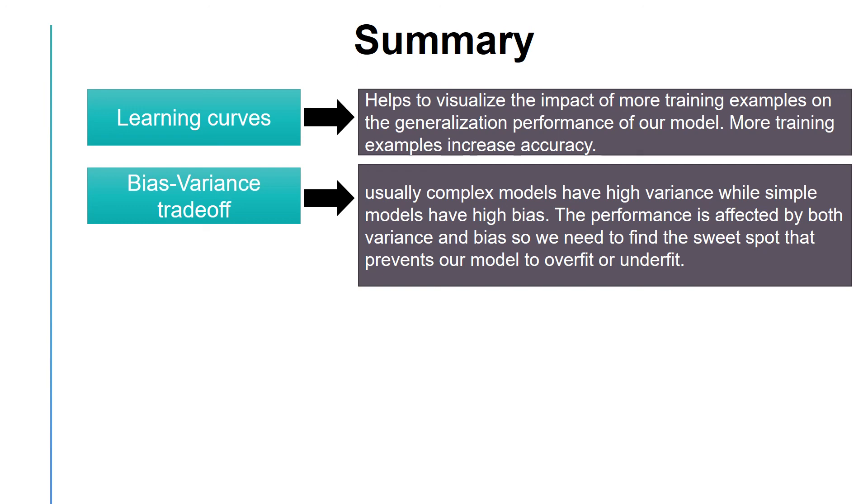While simple models tend to have high bias, which usually results in underfitting. At the end, the performance was affected by both variance and bias, so we needed to find the sweet spot to avoid overfitting as well as underfitting.